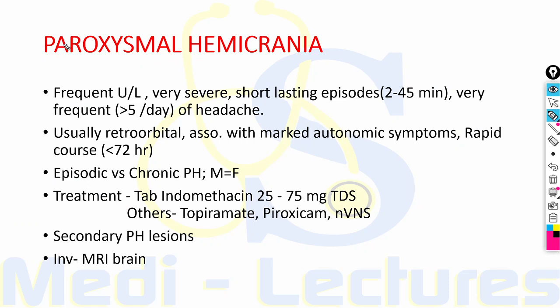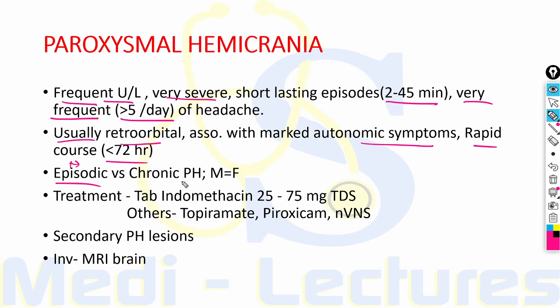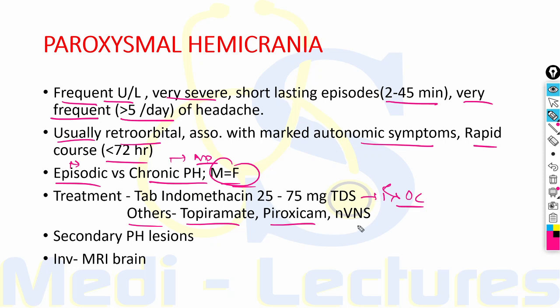The next type in TACs is paroxysmal hemicrania, which presents with frequent unilateral very severe headache with short-lasting episodes of 2 to 45 minutes, more than 5 episodes per day, usually retro-orbital, associated with cranial autonomic symptoms, with a rapid course within 72 hours. Episodic type has remission; chronic paroxysmal hemicrania has no remission. Male to female ratio is equal. Treatment of choice is indomethacin 25 to 75 mg TDS. Other drugs like topiramate, piroxicam, and non-invasive vagal nerve stimulation can be used.